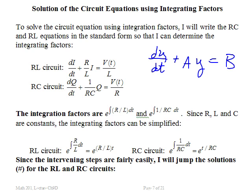Here's the first derivative, di/dt, which is equivalent to dy/dt. Then R over L makes up my A — highlighted in yellow. For the RL circuit, A is R over L and B is V over L. For the RC circuit, B is V over R and A is 1 over RC.